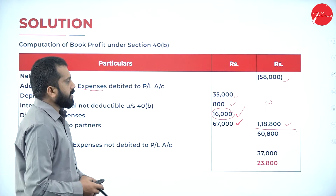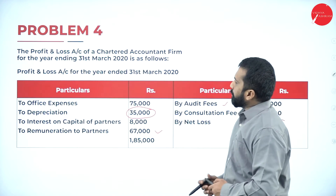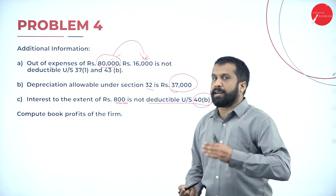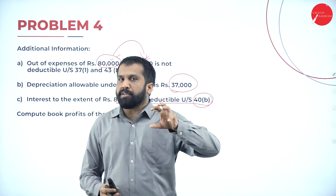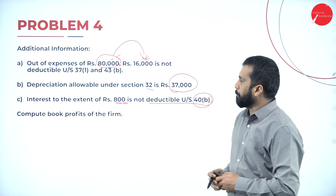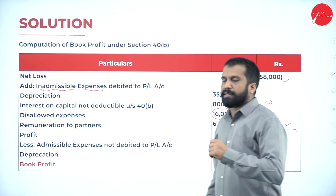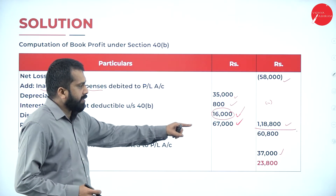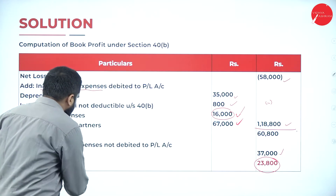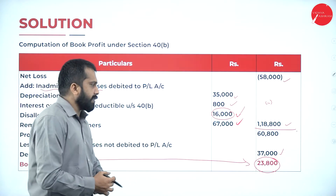After getting 60,800, as per the adjustment, we have depreciation as per income tax. In the question they have given depreciation has to be added; depreciation as per adjustment has to be deducted. Depreciation given in the table we are supposed to add; depreciation given in the adjustment we are supposed to deduct — remember this point. So 37,000: we are supposed to minus 37,000. 60,800 minus 37,000, your answer is 23,800. This is called your book profit. What is your book profit? 23,800.